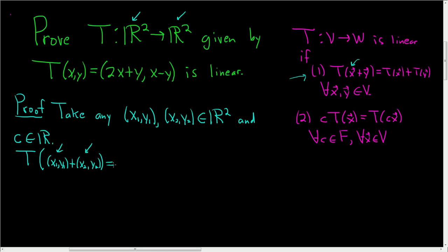And now we'll actually perform the addition. So how do you add two vectors? Well, you add the components. So this is simply x1 plus x2, comma, y1 plus y2.